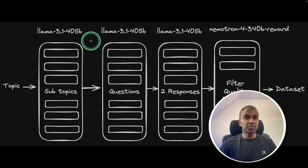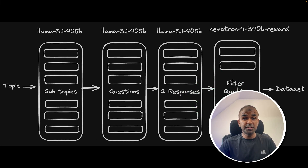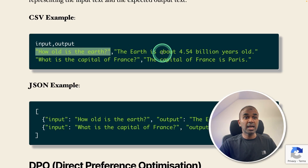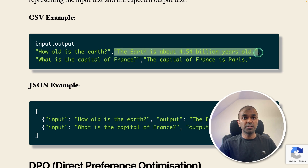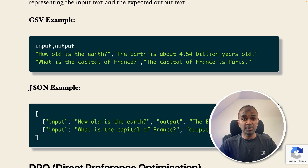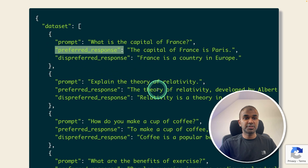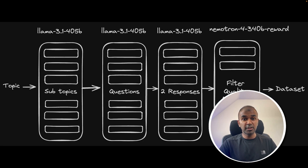In this tutorial, we can use Nemotron 340 billion interchangeably with LLaMA 3.1. We are creating two responses because towards the end, we can also use this dataset for preference fine-tuning. So what is instruction fine-tuning? You provide a question and teach the large language model that it should respond in a certain way — that is instruction fine-tuning. What is preference fine-tuning? You provide a question, two different answers, and then tell the model the preferred response. We will mainly focus on instruction fine-tuning, but you should be able to configure this for preference fine-tuning as well.